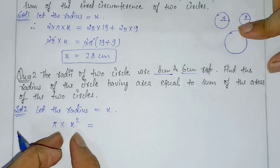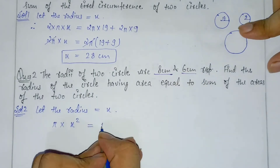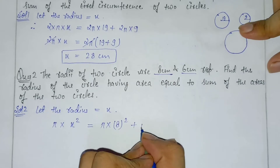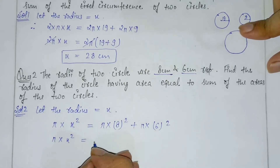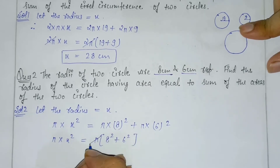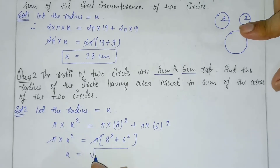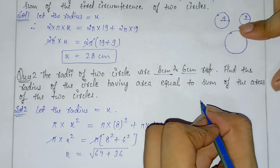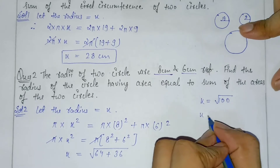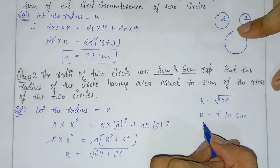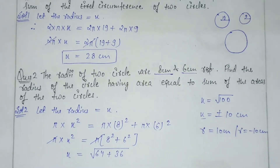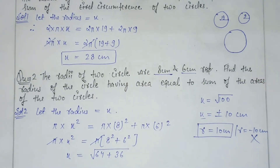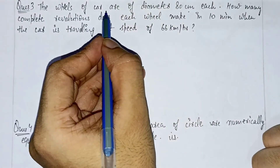The area πx² equals π×8² plus π×6². Taking π common: x² = 8² + 6² = 64 + 36 = 100, so x = √100 = ±10 cm. Since the radius cannot be negative, we neglect the negative value, and the answer is 10 cm.